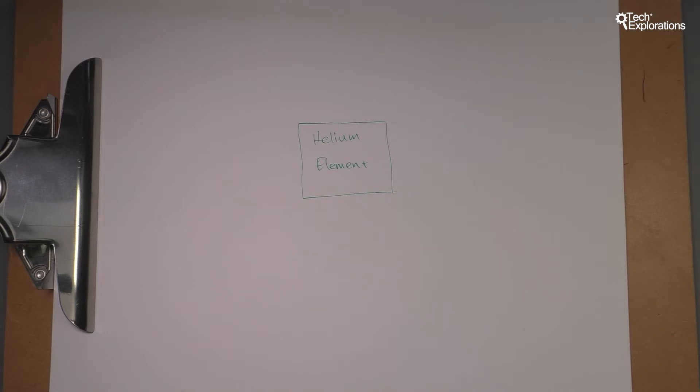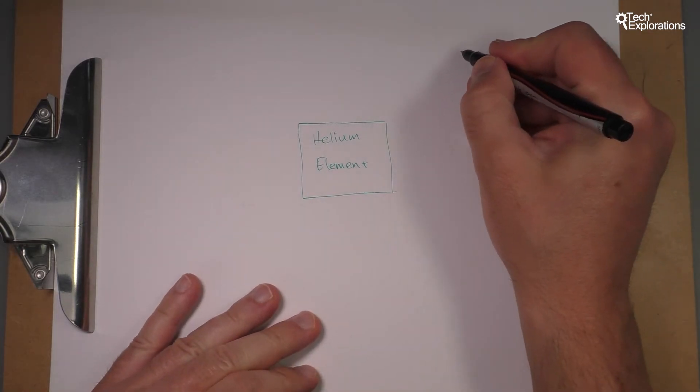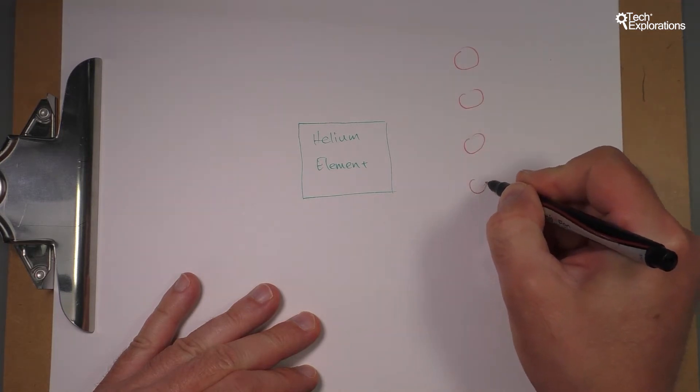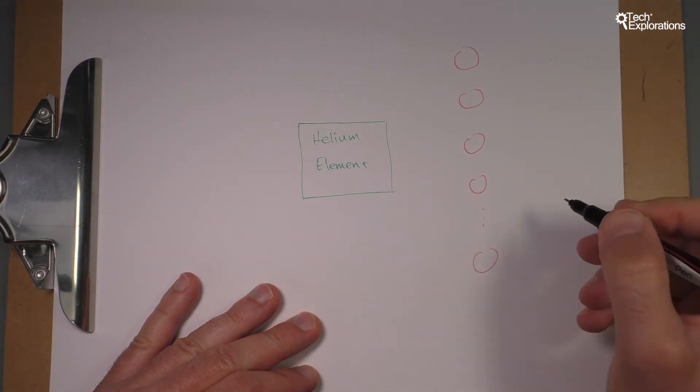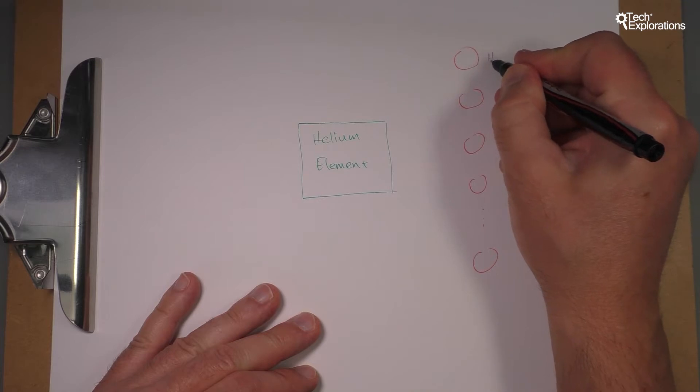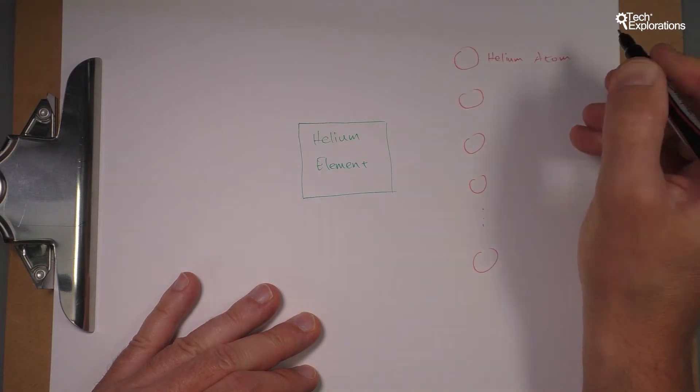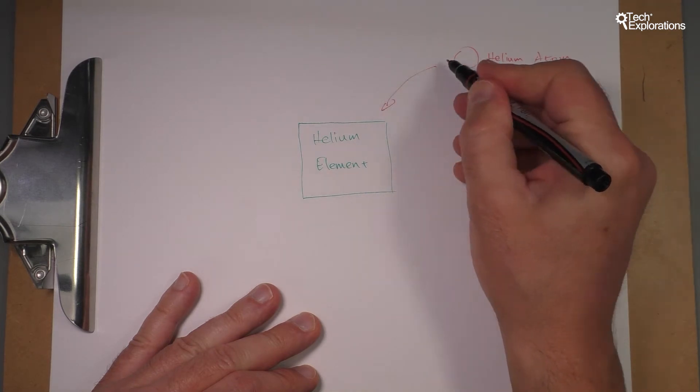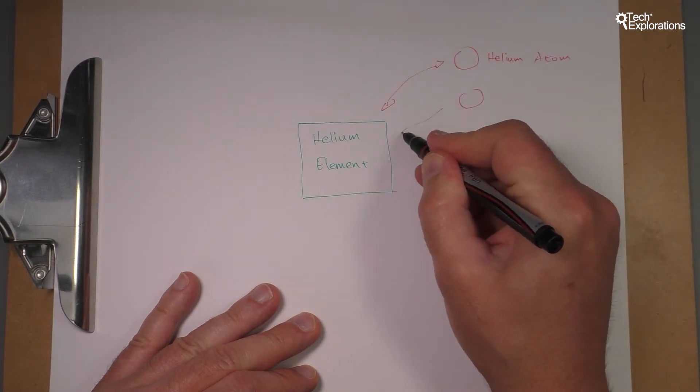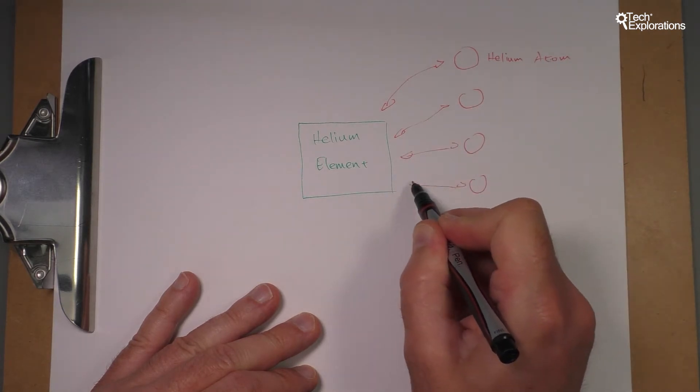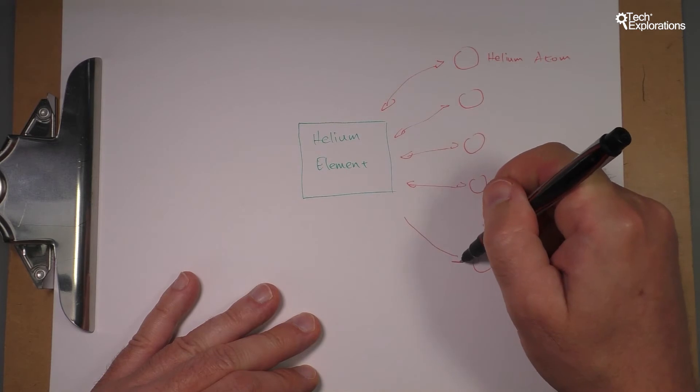Let's use red for them and each one of those circles represents an atom and you can have a lot of them. So each one is a Helium atom. Now each atom wirelessly communicates two ways, and I'll explain what that means, with the element. That's all it does. So long as it's within range, then an atom will be able to communicate with the element.